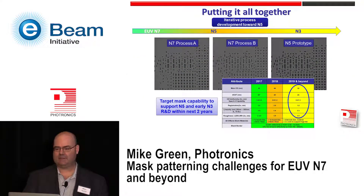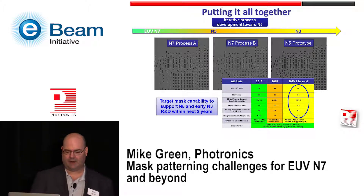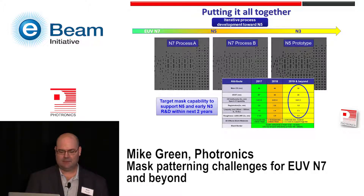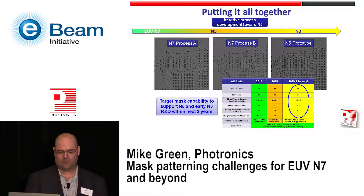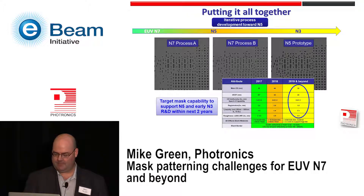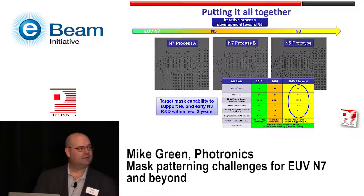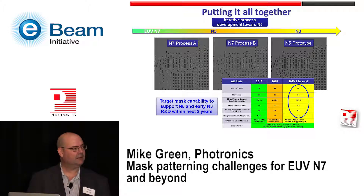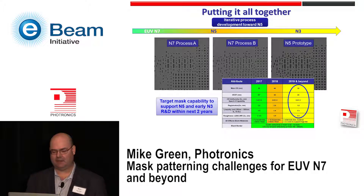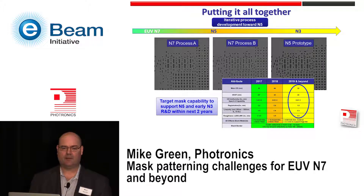Now that we've found ways to characterize pattern fidelity, characterize the process, and improve it, we put it all together. We do an iterative process to develop the mask-making processes needed to get into N5 and beyond. Here are some N7 class processes — one and another in similar and different tones — not anywhere near the pattern fidelity needed for N5 and beyond. And here's an N5 prototype process that at least qualitatively is better. It's still much under development, but we target mask capability to support N5 and early N3 R&D within the next two years.